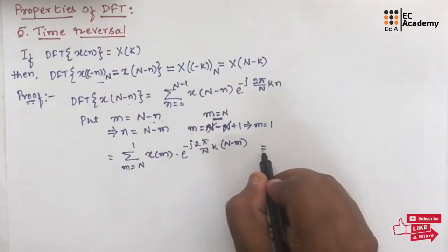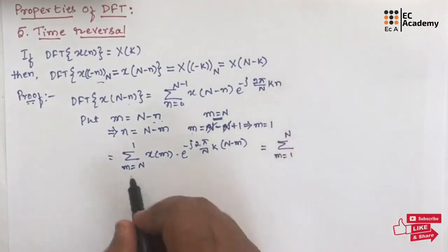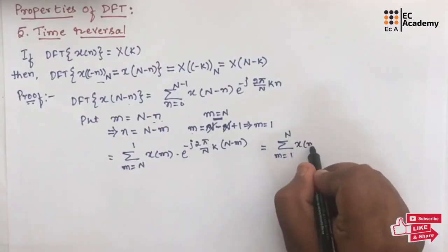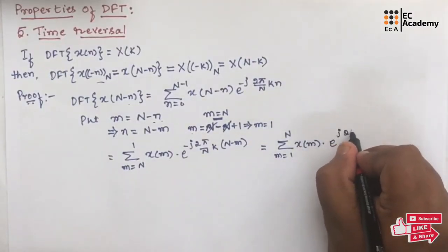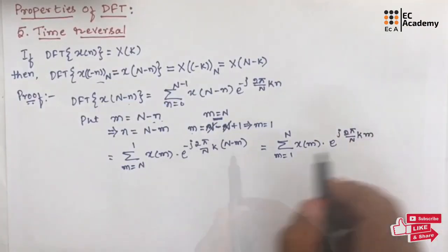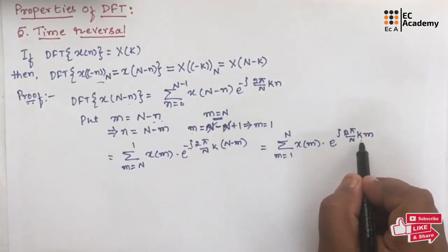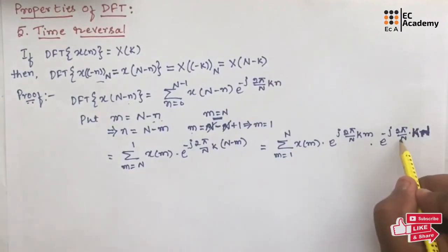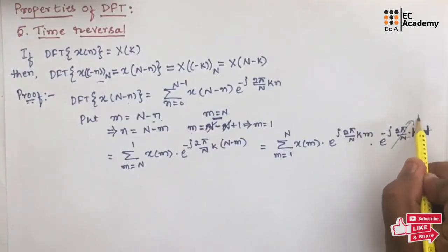We can interchange the summation limits: taking summation from 1 to N is the same as from N to 1. We can split the exponential term as e to the power of j 2π/N times km — since m has a negative value, minus times minus gives plus — multiplied by e to the power of minus j 2π/N times kN. Cancelling the two N's, we are left with e to the power of minus j 2π times k, and this value is always equal to 1.